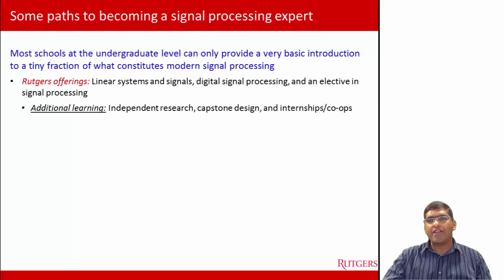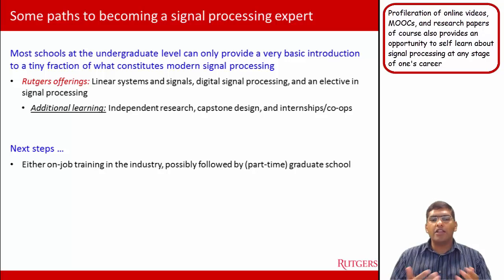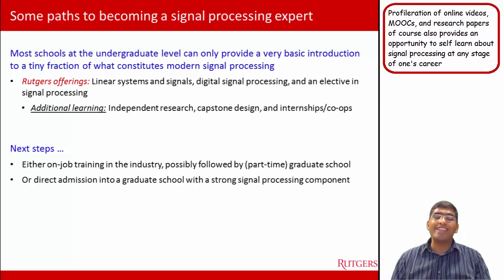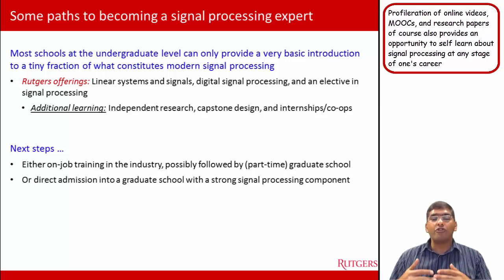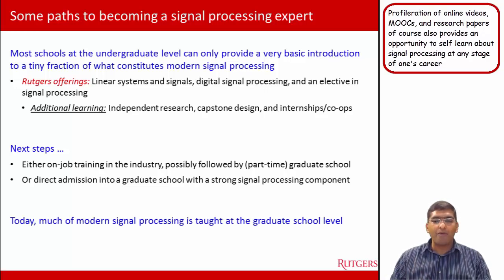Once you complete your undergraduate studies and take some of these basic courses, the next step could be going to industry, learning on the job about signal processing, and perhaps taking part-time courses to become a better expert. Or you could go directly into a graduate school with a strong emphasis on signal processing. You should look carefully at the offerings of any graduate school you are considering for a signal processing focus. At the graduate school level, modern signal processing is really taught, but you have to start at the undergraduate level.